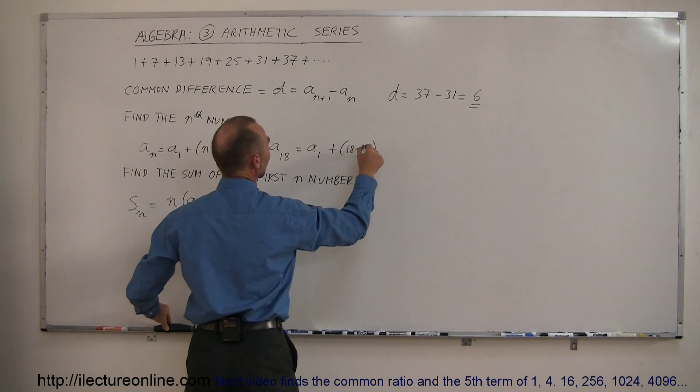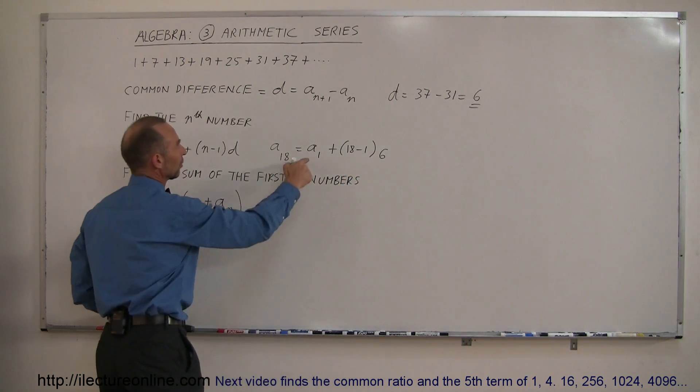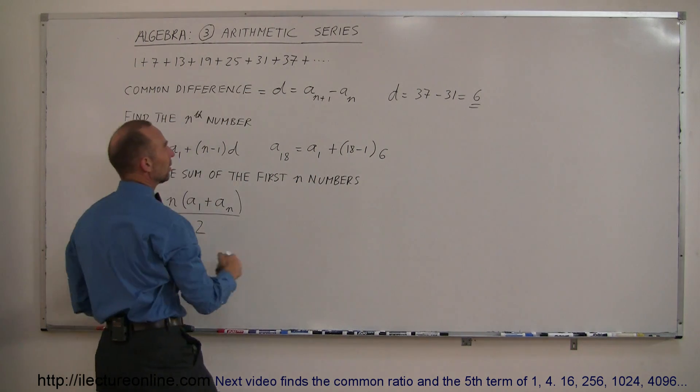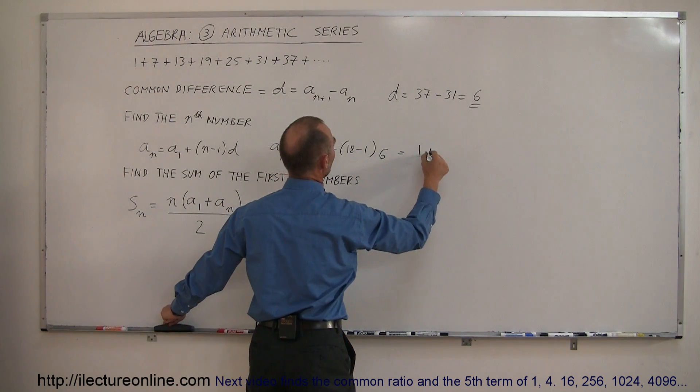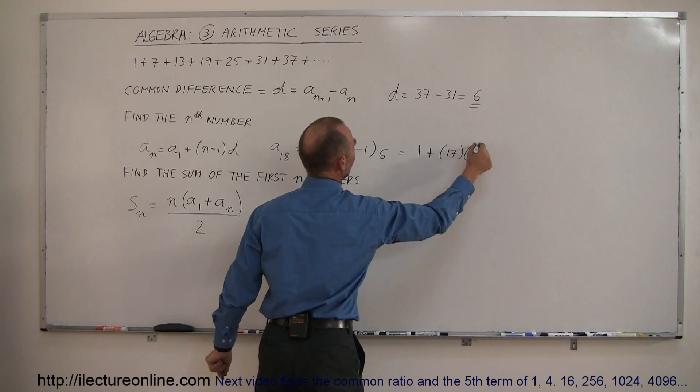n is 18, so 18 minus 1 times the common difference of 6. All right, and the first one in this series is the number 1, so this can be written as 1 plus 17 times 6.